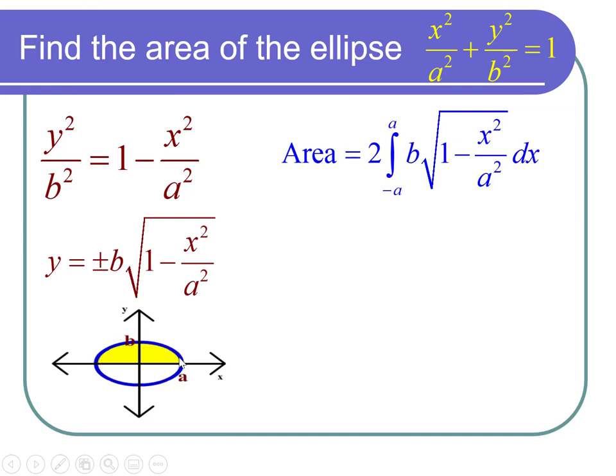In particular the area is twice the integral from negative a to a of our function b times the square root of 1 minus x squared over a squared dx.